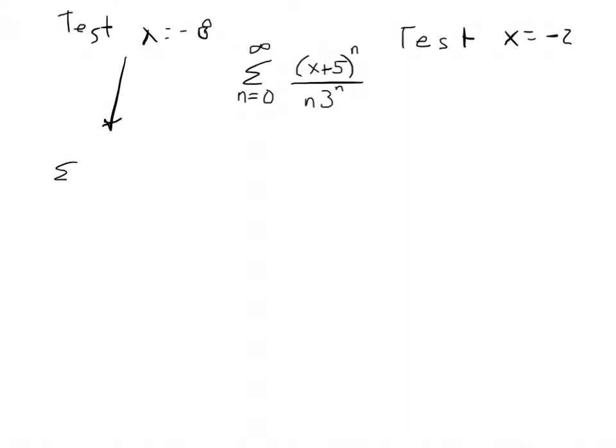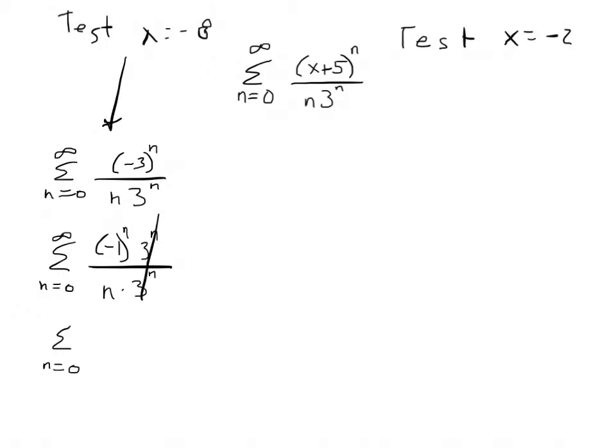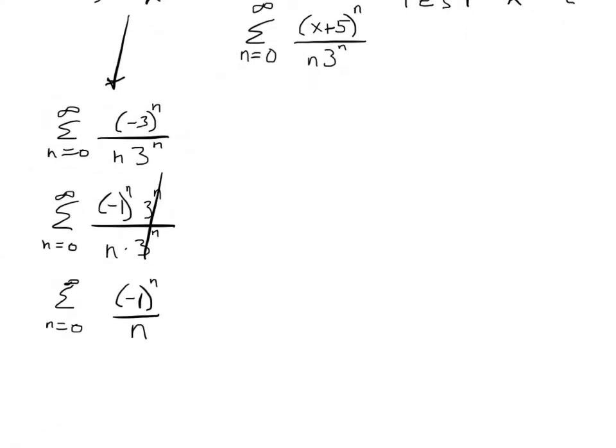Take a look at this. What happens when I plug in negative 8 to that original series? When I do that, I end up with the sum from 0 to infinity of negative 3 to the nth over n times 3 to the nth power. Now I'd love to cancel the negative 3 to the nth and the 3 to the nth, but I can't because one of them is negative. So remember that trick that I showed you in the last one? You can split the negative 3 to the nth into two pieces, negative 1 to the n and 3 to the n. When I do that, these cancel out, and I'm left with the sum from 0 to infinity of negative 1 to the n over n.